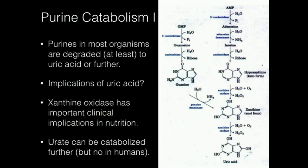That is where the pathway converges with GMP catabolism. GMP first reacts with a nucleotidase, which hydrolyzes off the phosphate giving guanosine. Then a nucleosidase removes the ribose from guanosine, giving guanine. In a similar reaction to adenosine deaminase, guanine deaminase deaminates this amine and replaces it with a carbonyl — taking the nitrogen and converting it to an oxygen. Guanine deaminase converts guanine to xanthine, which is the convergence point between GMP and AMP catabolism.